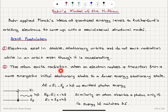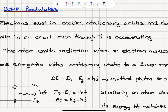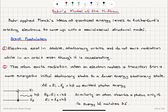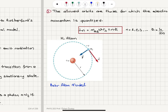Number two: the atom emits radiation when an electron makes a transition from a more energetic initial stationary state to a lower energy stationary state. From the initial energy level E_i to final energy level E_final, it emits a photon hf, which is equal to the difference between the energies of these levels. Similarly, an atom will absorb a photon if its energy matches the difference between two energy levels.